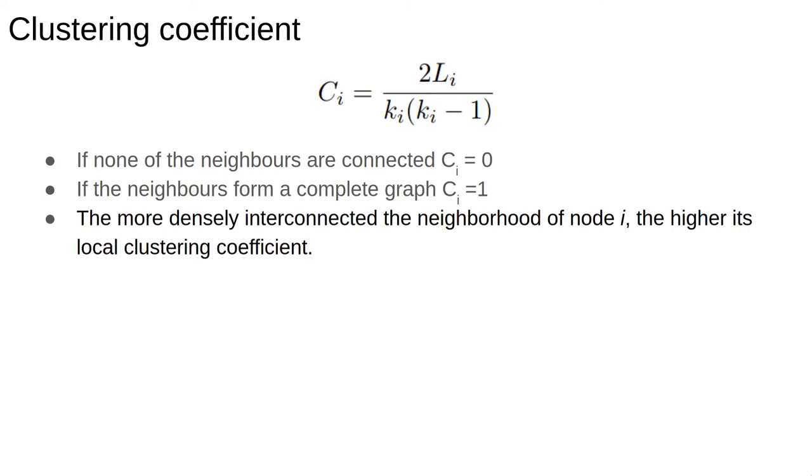If none of the neighbors of i are connected then Ci is 0. If they're as connected as possible they form a complete graph and Ci is 1. Basically the more densely connected the neighborhood of i is, the higher its clustering coefficient. Nodes with high Ci are part of dense local webs. Nodes with low Ci could be hubs.